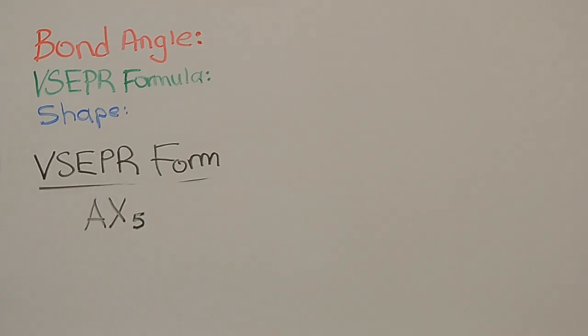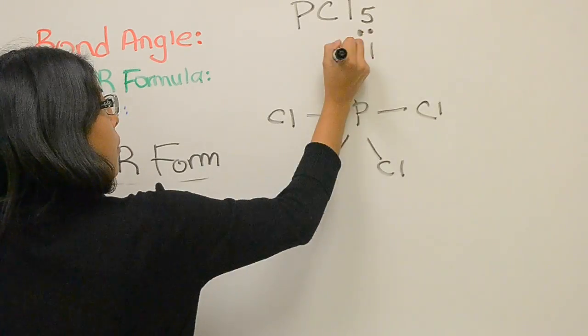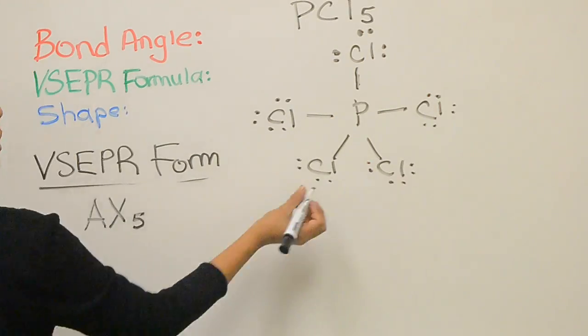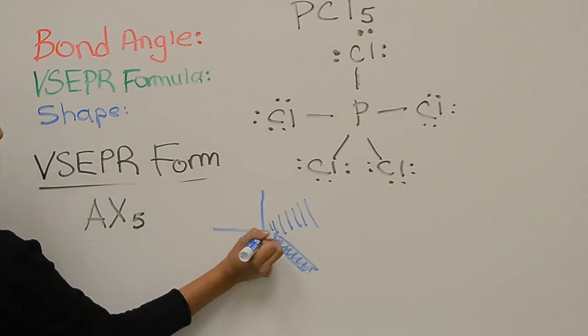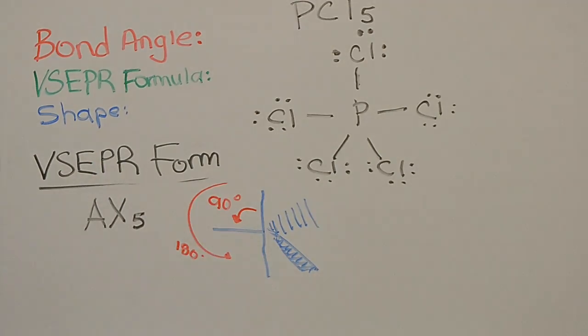Now we have phosphorus trichloride with a VSEPR form of AX5 with three different bond angles: 90 degrees, 120 degrees, and 180 degrees. The shape is a trigonal bipyramidal.